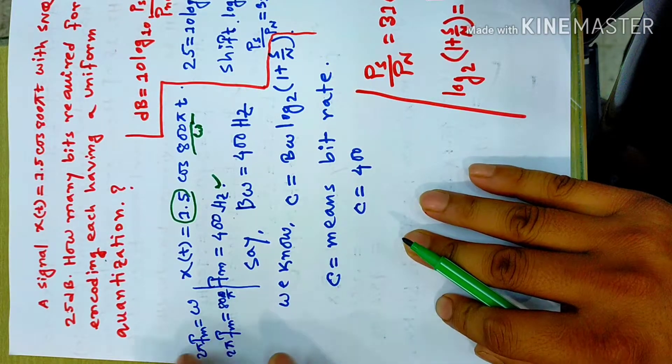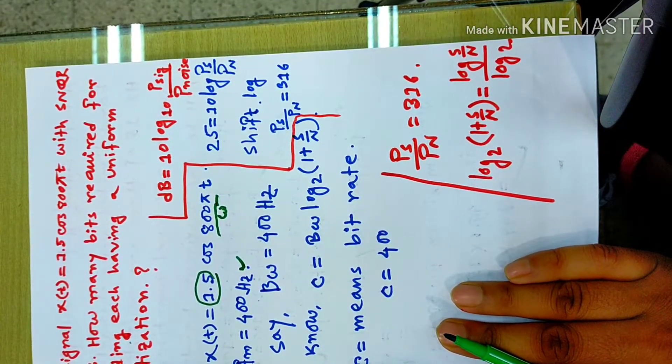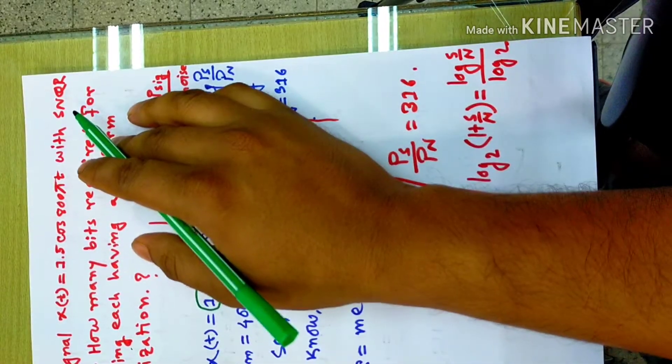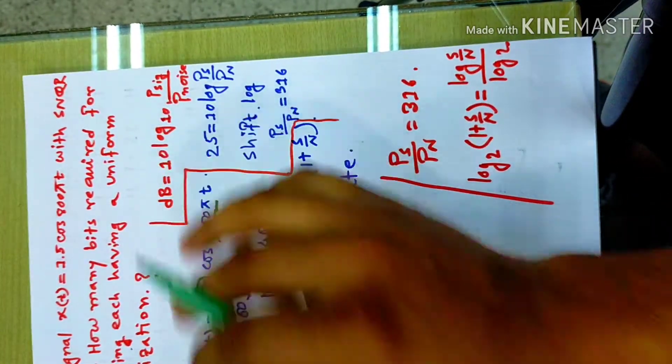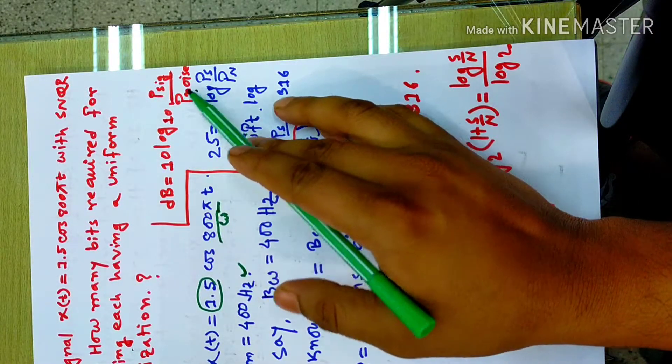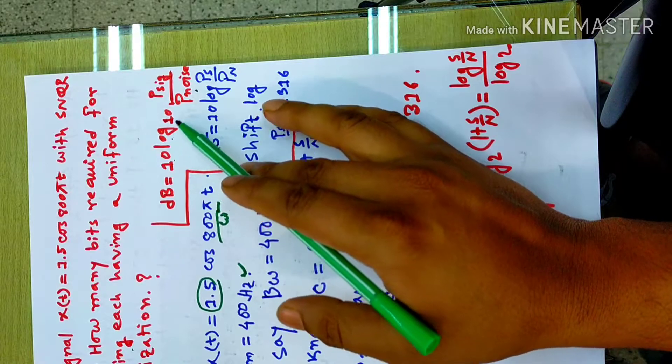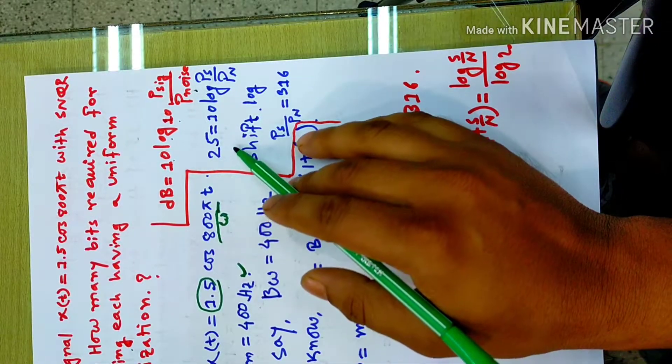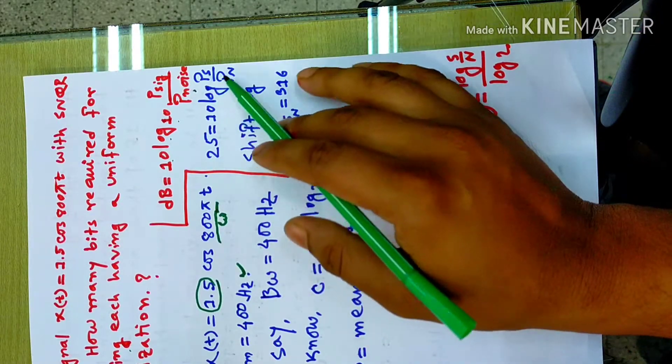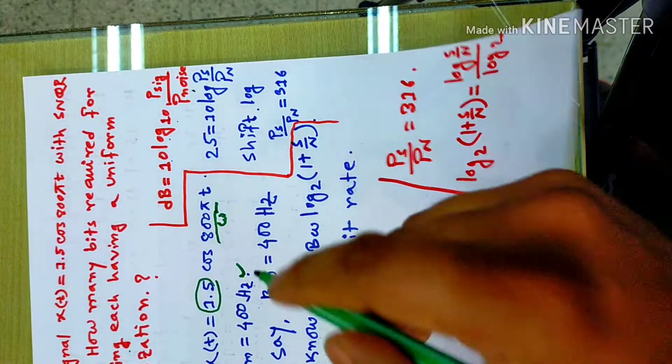Now, we know that the signal-to-noise ratio is 25 decibels. This is 10 log₁₀ of signal power by noise power. So the decibels are 25. Now we know that we have anti-log: signal power by noise power. This is an anti-log system.